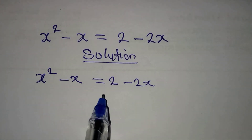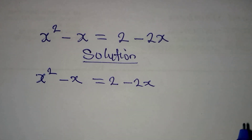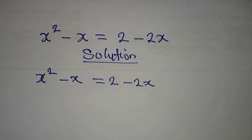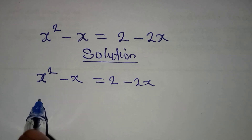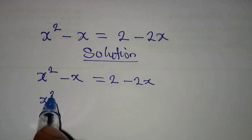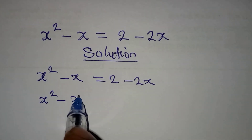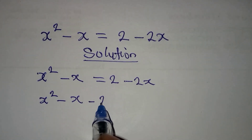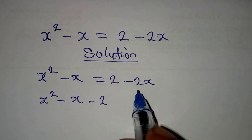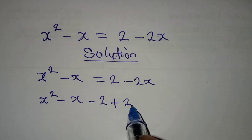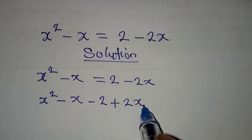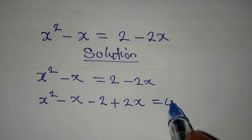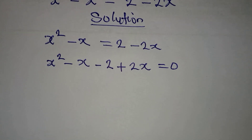By looking at this you may not even know what to do, but let's bring everything to the left-hand side first. This will be x squared minus x, then this comes here to become minus 2, this comes to become plus 2x, and everything is equal to 0.